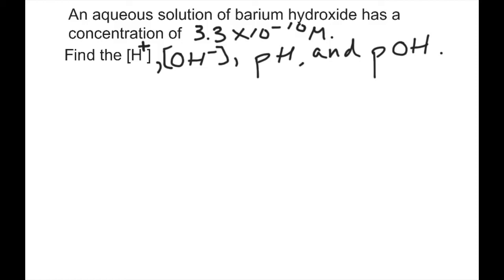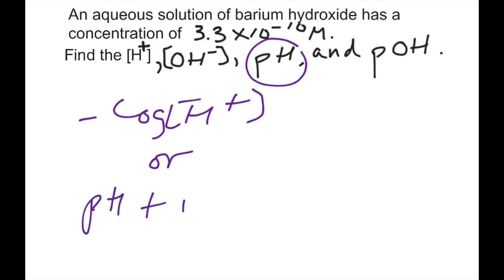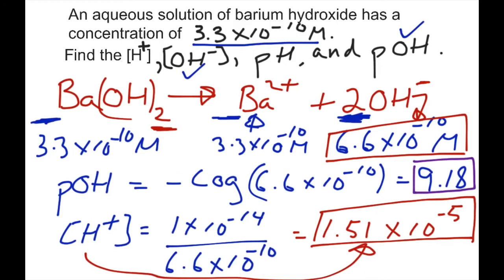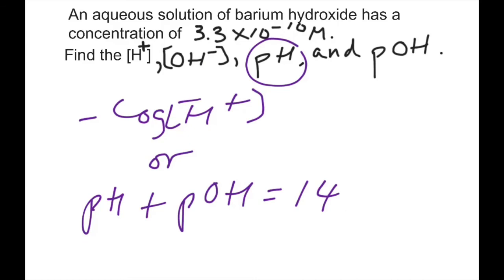We have to find one more guy, and that's our pH. And another simple way you can do that, you can take the negative log of H plus, or you can simply say pH plus POH equals 14. Either way, you should get the right answer. I'm going to flip back here. I see that my POH is 9.18, so I'm going to use that. So, 9.18 is my POH, so my pH will be equal to 14 subtract 9.18, and if I'm not mistaken, my pH is 4.82.